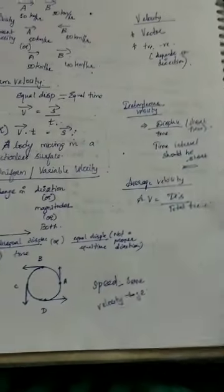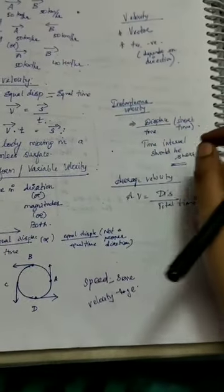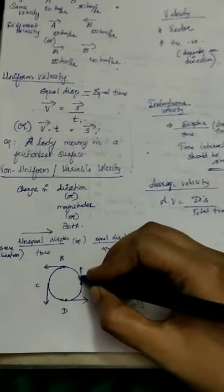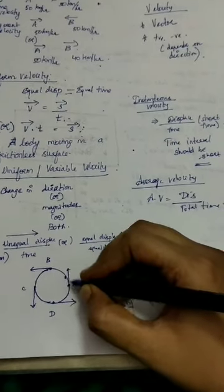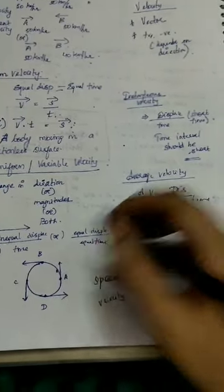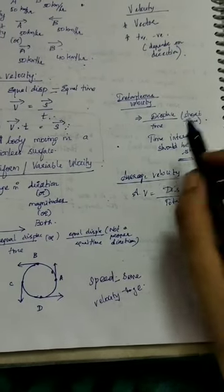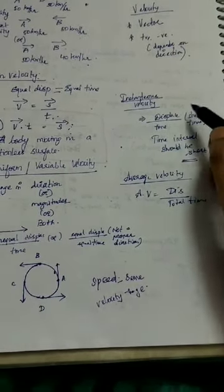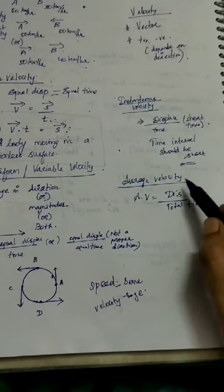Instantaneous velocity is measured over a very short interval of time. If I measure from one point to a nearby point within a very short interval, that is instantaneous velocity — displacement over that short interval divided by the time for that short interval.